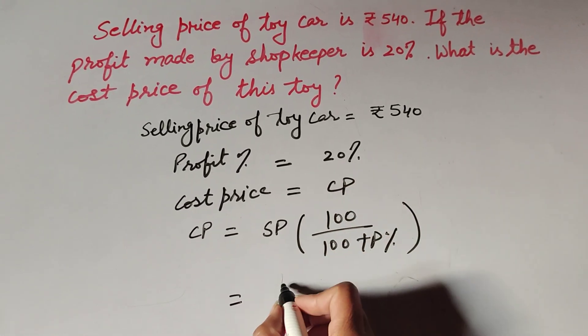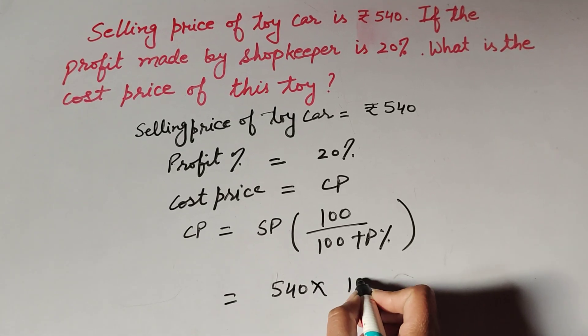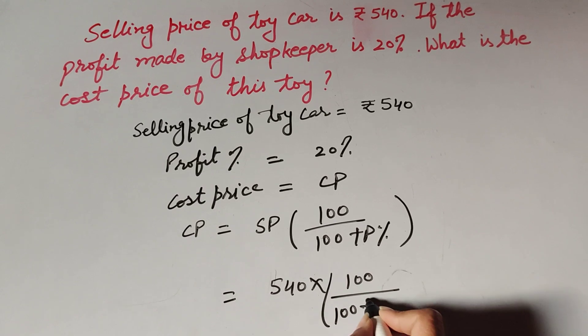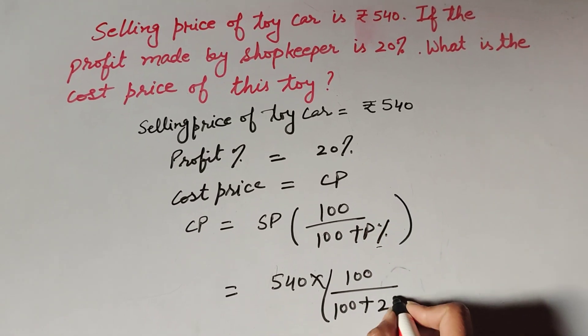Selling price is given, it is equal to 540 multiply 100 over 100 plus profit percent. It is equal to 20 percent, 20.